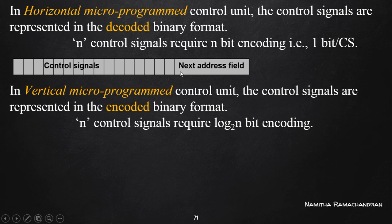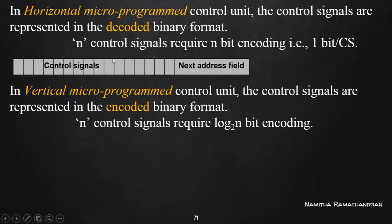This is the structure of a horizontal micro instruction. To represent n different control signals, the control signal field contains n different bits, and each bit indicates a specific control signal.